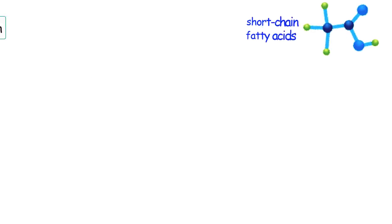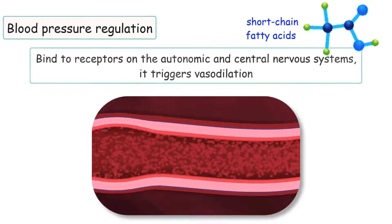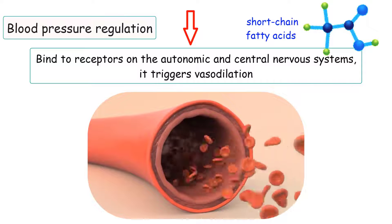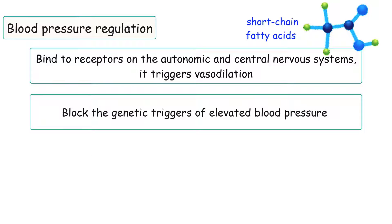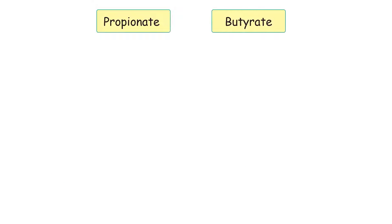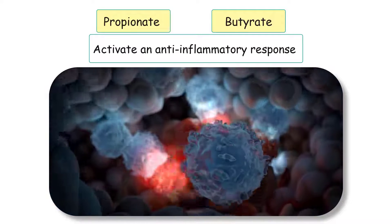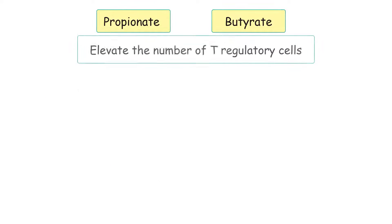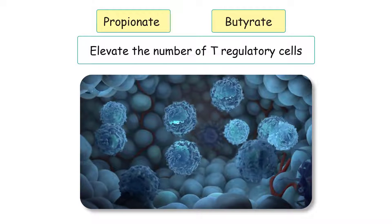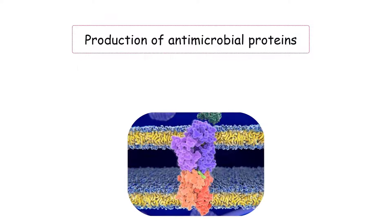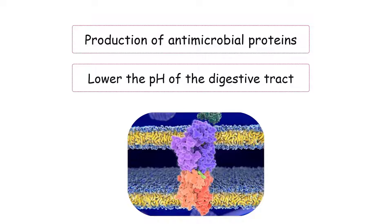The influence of short-chain fatty acids extends to blood pressure regulation. When short-chain fatty acids bind to receptors on the autonomic and central nervous systems, it triggers vasodilation — an expansion of blood vessels — resulting in a decrease in blood pressure. Short-chain fatty acids also block genetic triggers of elevated blood pressure and maintain the health of endothelial cells lining the blood vessels. Propionate and butyrate advance immune health by activating an anti-inflammatory response, suppressing gene expression associated with inflammation, and elevating the number of T regulatory cells, which shield the body from overactive immune responses and chronic inflammation.